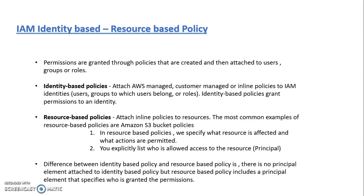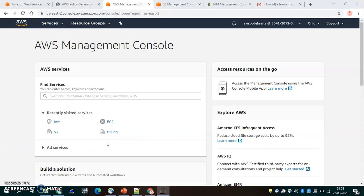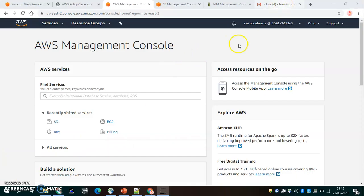We will see a hands-on in which we'll create one user who will have access only to S3 buckets and S3 resources, and cannot access any other AWS resource. So how do we create the permissions for that user so that he can only see S3 buckets? Let's move on to the hands-on section. We are now in the AWS console as user AWS Code Brains.